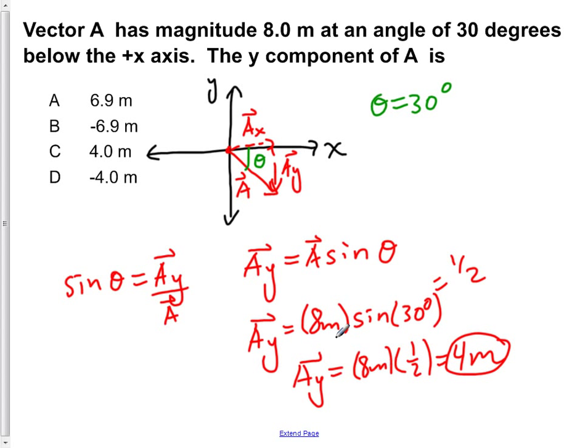But now we have to account for the direction that we're pointed. We're told that we're 30 degrees below the x-axis. And if you follow this vertical component here, we can see that it's pointing down in the negative direction. This would give us a y component of negative 4 meters because we have to take into account the direction in which it is pointing. So our answer would be D, negative 4 meters.